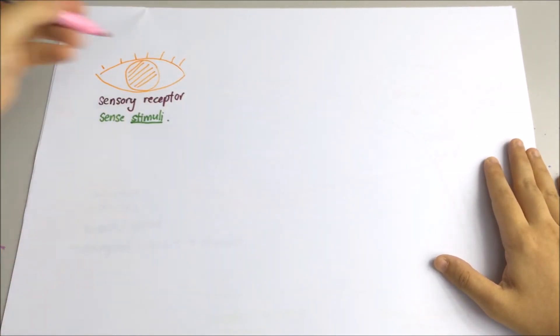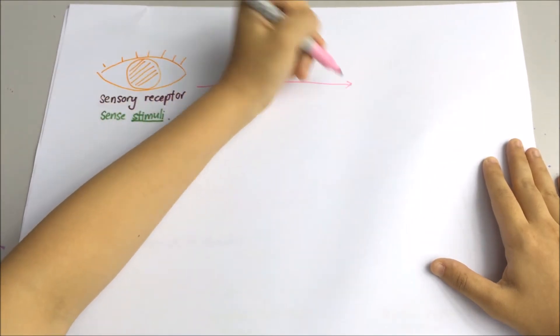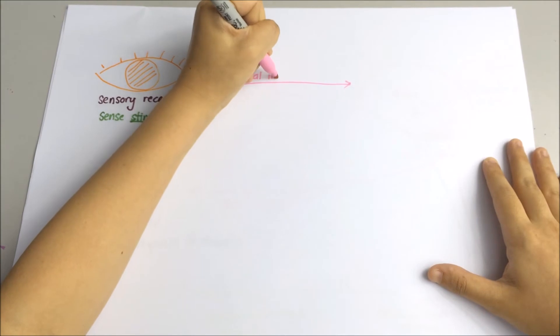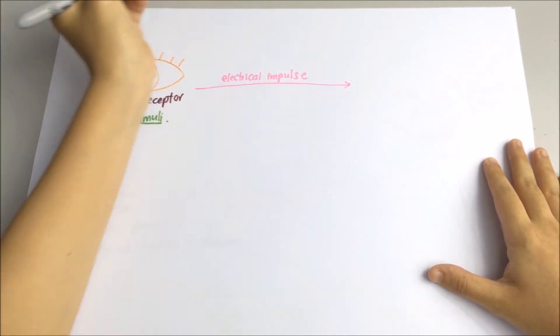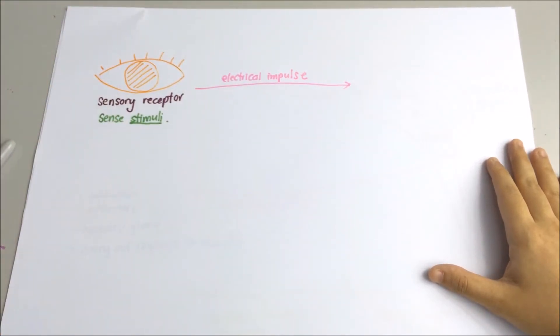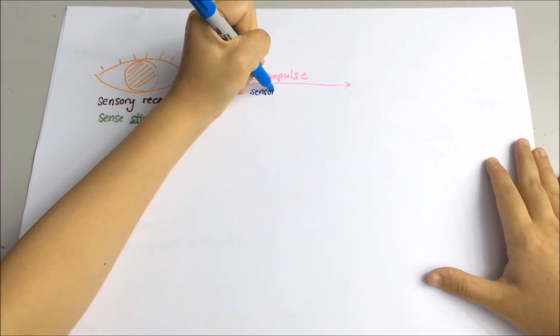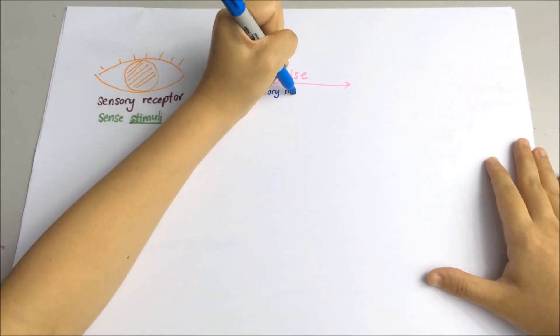Then, the information about these stimuli is sent as electrical impulses from the receptor cells through the peripheral nerve, specifically sensory nerve, to the central nervous system.